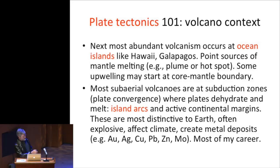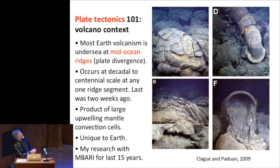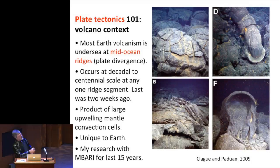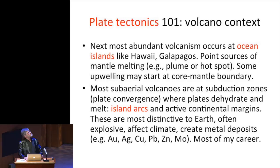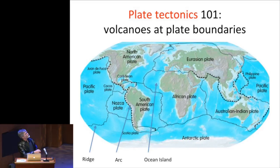No one has ever seen these mid-ocean ridge eruptions — there's ocean in the way, and by the time a ship gets there it's usually all over. These are pictures taken on the floor of the ocean, underneath two kilometers of water, by my colleagues at MBARI. I've been working with them on mid-ocean ridges — that's the paper I'm writing this week. These are the forms of lava that form at the bottom of the ocean at mid-ocean ridges. Volumetrically the next most common are at hot spots like Hawaii. I'll say the most about the third type that form in island arcs.